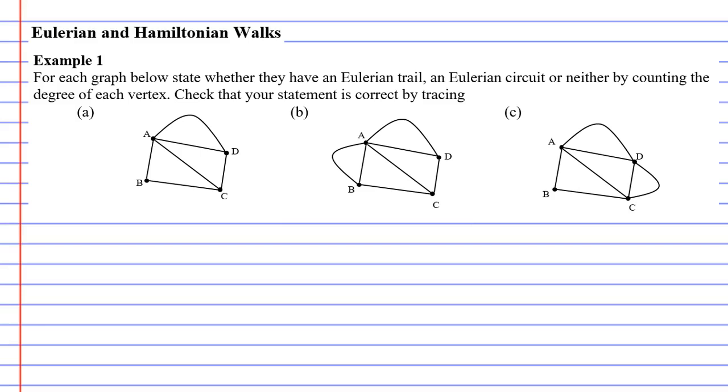So we'll start with question A, and we'll count the degree of each vertex. So this vertex has a degree of four. Four edges connect to it. This one has three edges connecting to it. This one has three, and finally, this one has two.